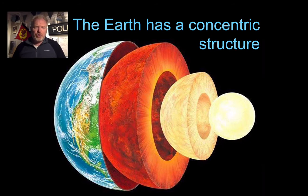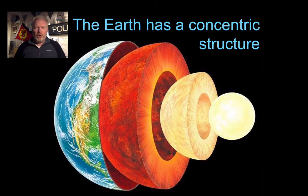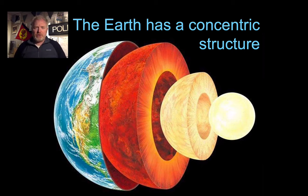The Earth has a layered structure. It's not uniform all the way through. We can actually split the Earth up into four concentric layers. Concentric means they all have the same centre point, and each subsequent layer completely surrounds the layer below it.